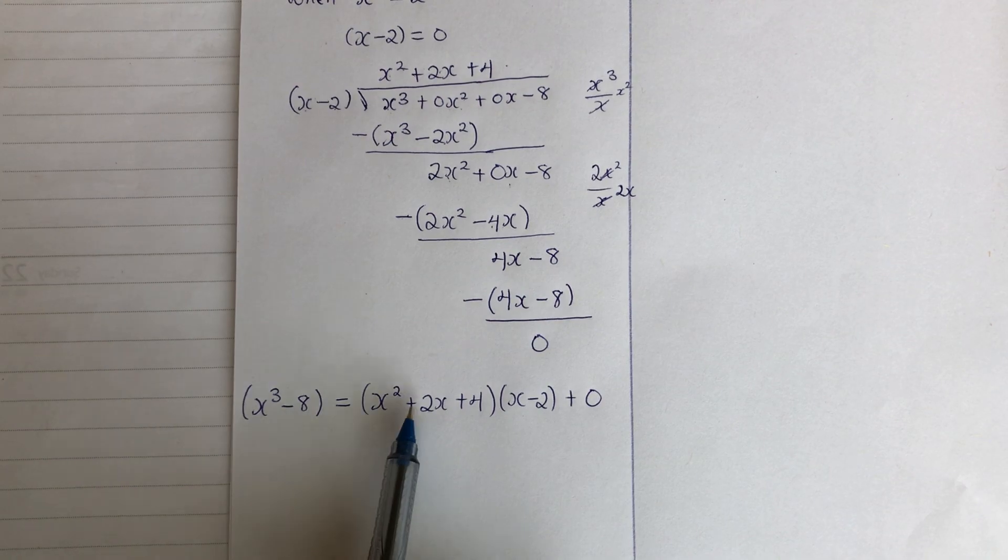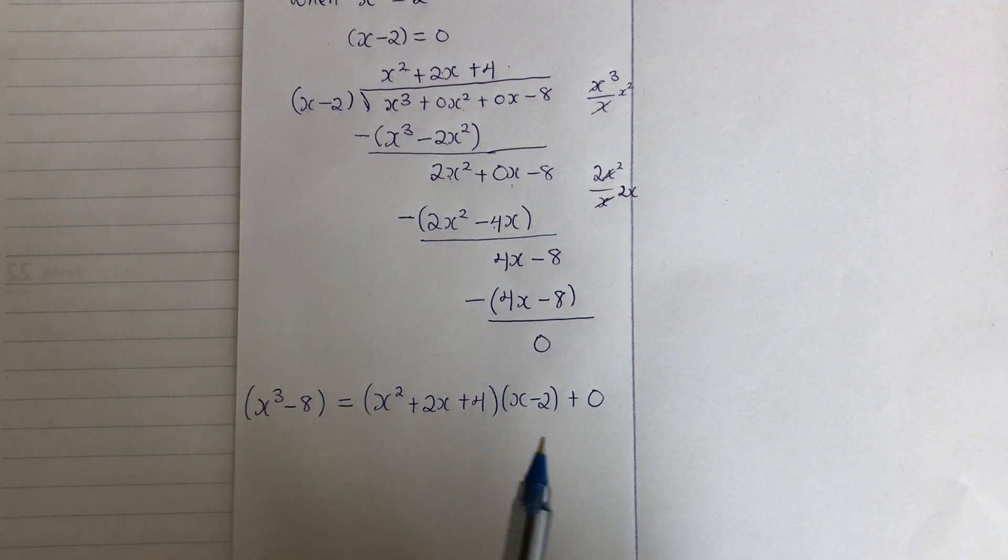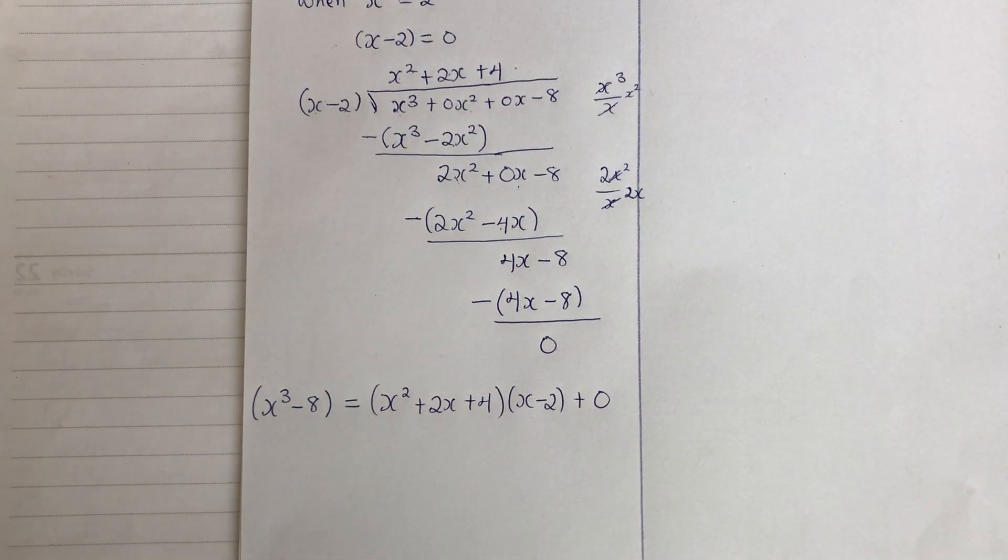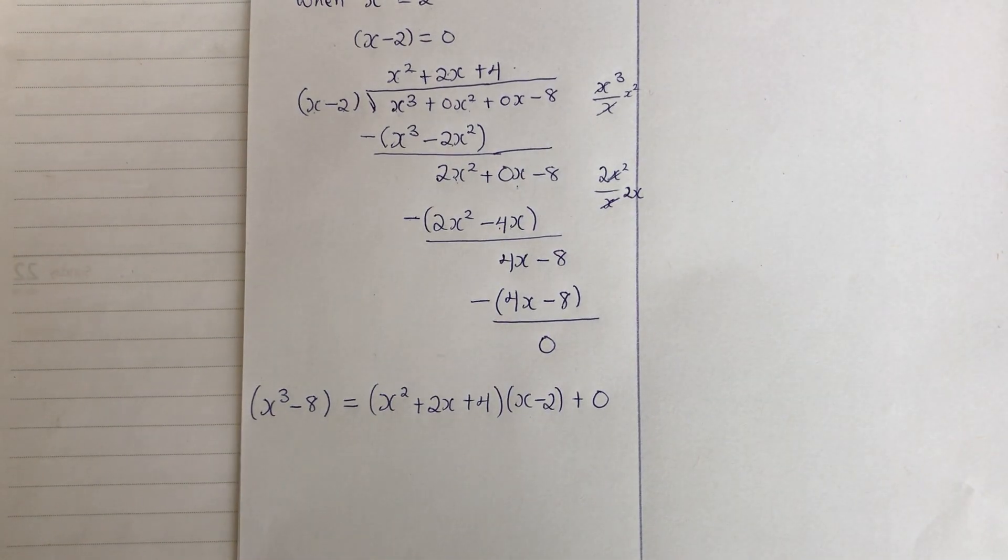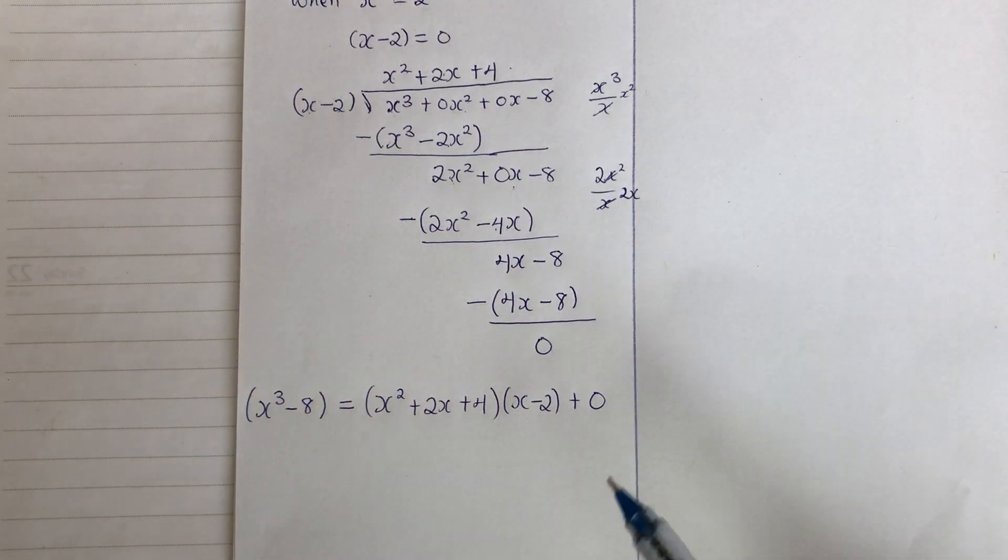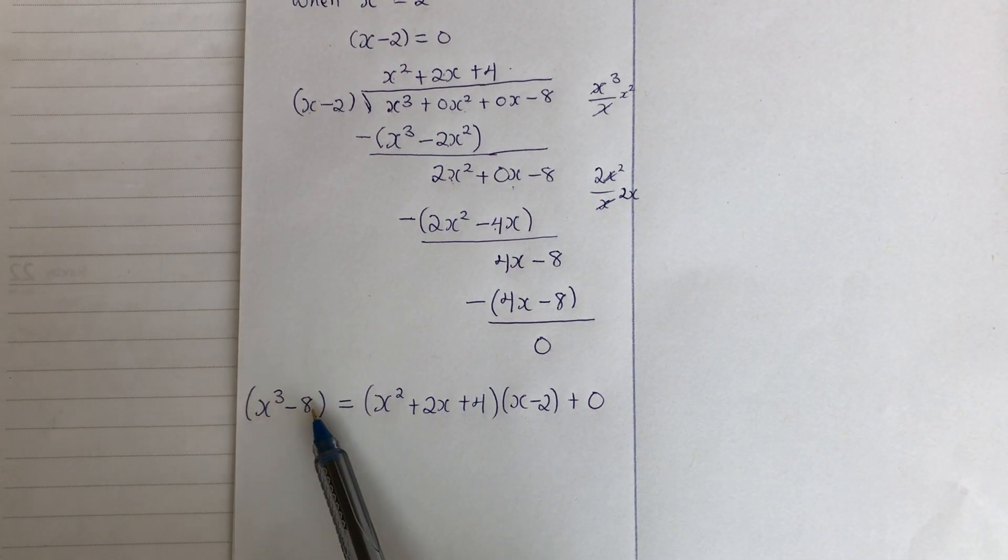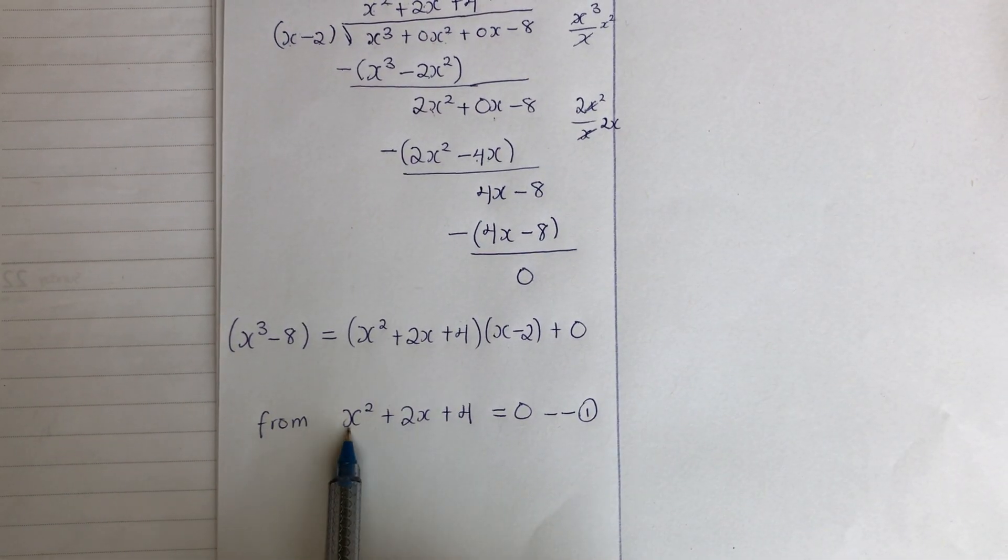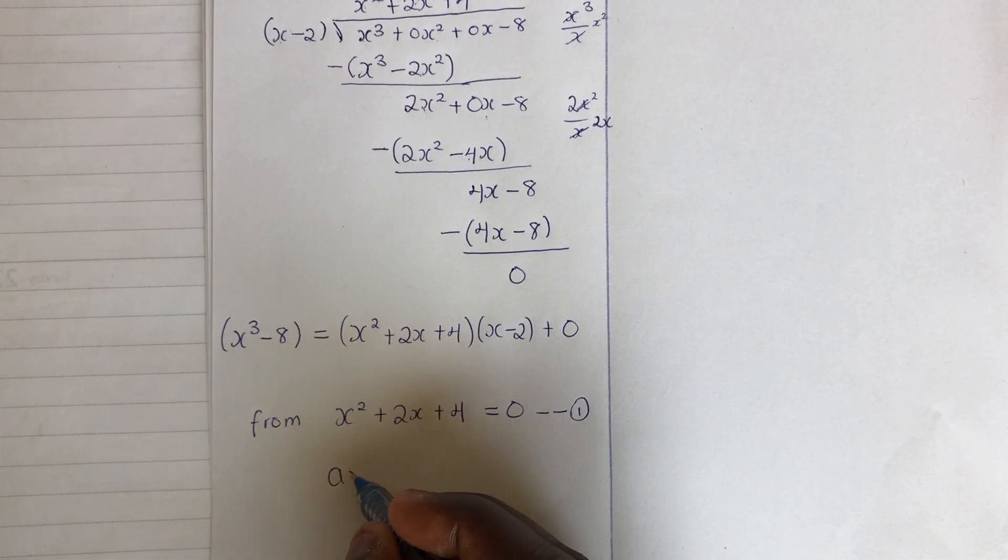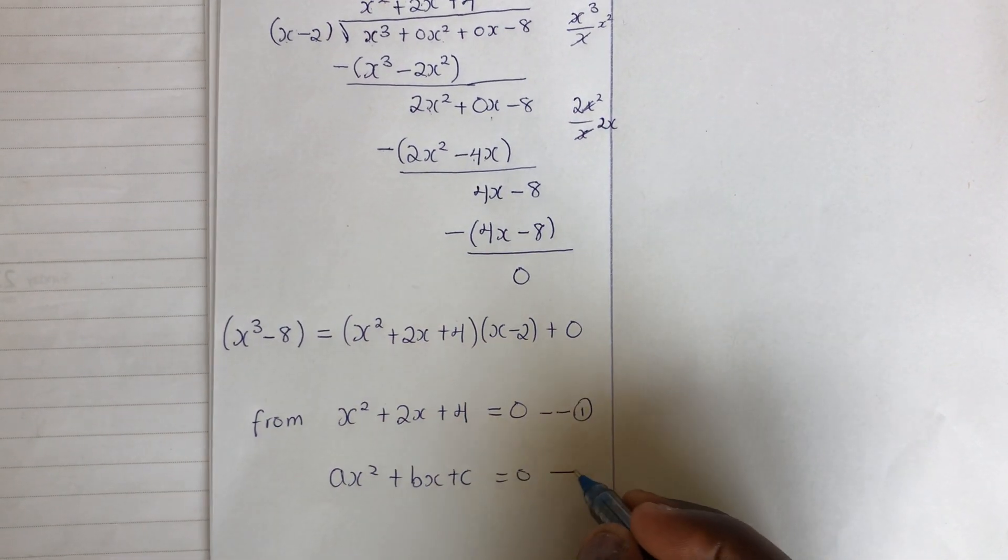But when I equate x squared plus 2x plus 4 to 0, I have to solve this again to find its root. Because x squared 10 means the root will be 2. And it will be a complex root. So for that reason, we need to apply the quadratic formula here. For only the quotient and find its root, then we add it to this one to generate the root of x cubed minus 8. So now our focus is here.